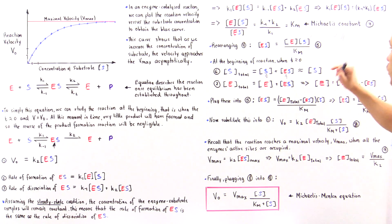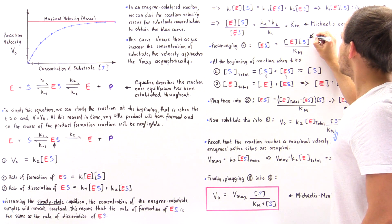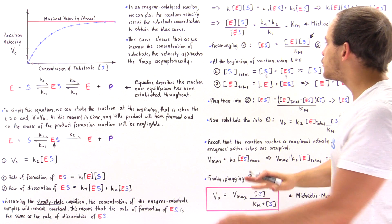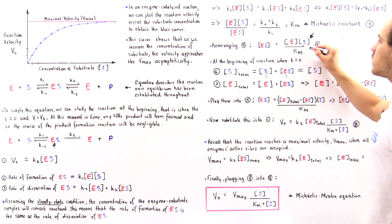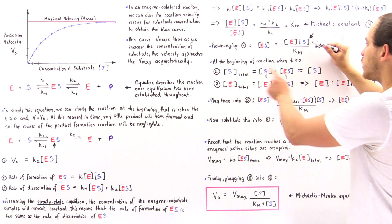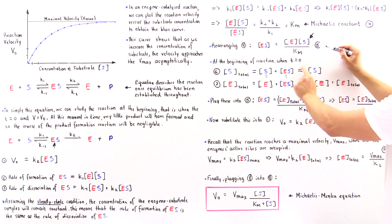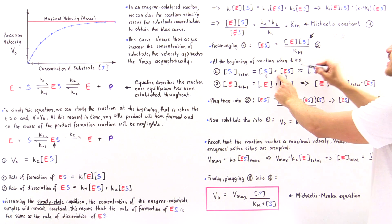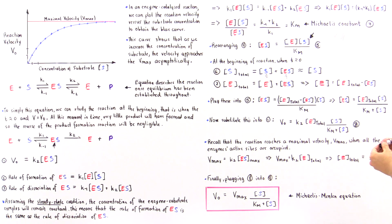Based on equation six, what that means is we can leave this S as it is. Because initially at the beginning, the total concentration of S as total is equal to the concentration of S that is not bound to the enzyme, because this quantity is very very small.